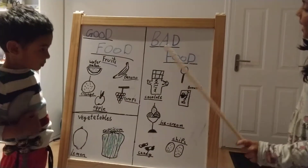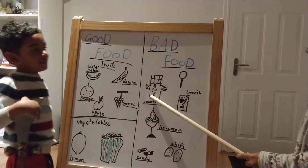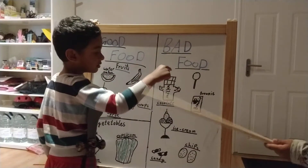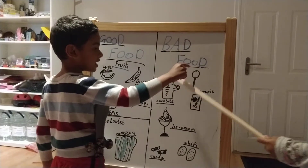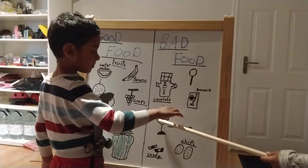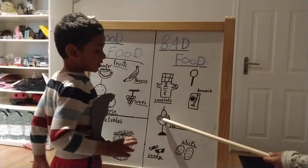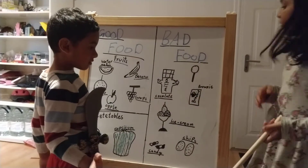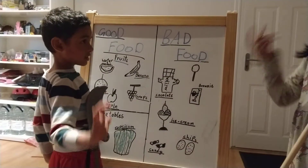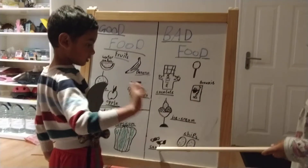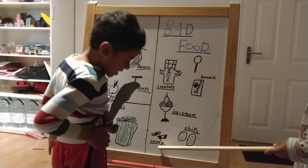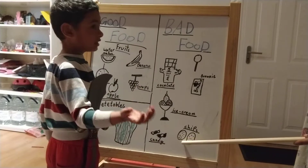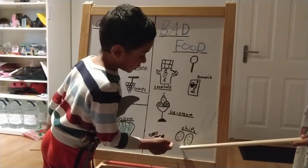Now Mithil is going to say the bad food. The bad food is lollipop, chocolate, and ice cream, and brownie. Brownie is a type of bread that has chocolate. And candy. And chocolate and cookies.